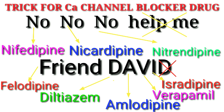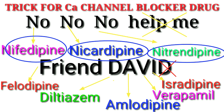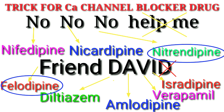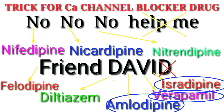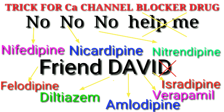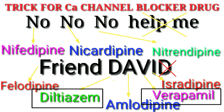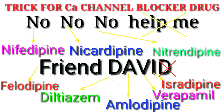So let's revise it. No, No, No, Help me, Friend David. N for Nifedipine, another N for Nicardipine, another N for Nitrendipine. Help me does not make any sense. F for Felodipine. David: D for Diltiazem, A for Amlodipine, V for Verapamil, I for Isradipine. Point to be noted: the drugs Diltiazem and Verapamil do not have the suffix '-dipin.' These two drugs do not end with '-dipin'; all other drugs do. So these two drugs you have to learn separately.